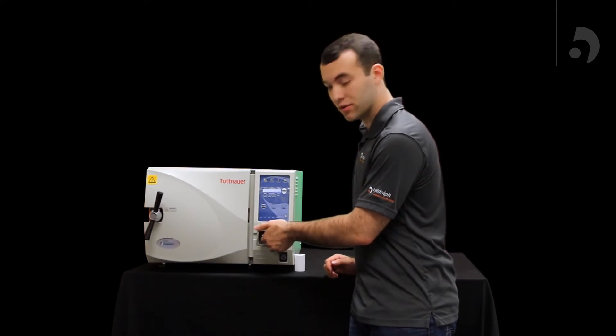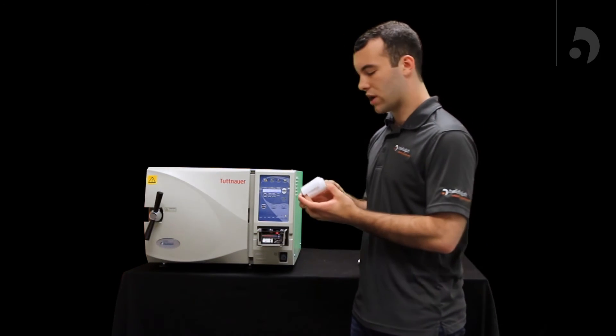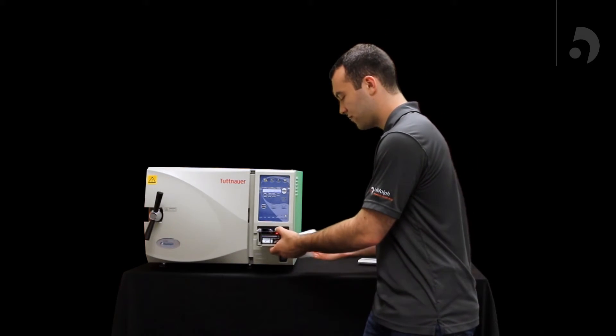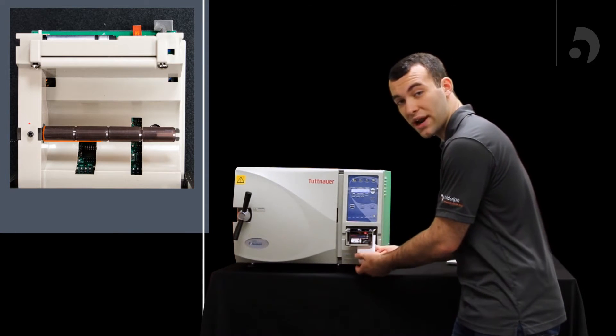You can pull your printer out from the center and grab your printer paper. You're going to want to make sure it's rolling over the top. Inside the printer, you'll find a rod. You can slide your printer paper right on over that.